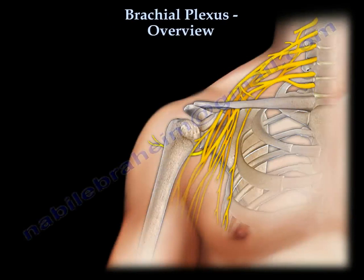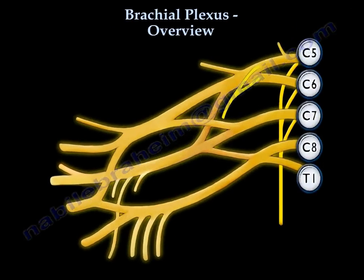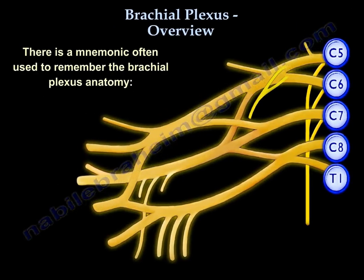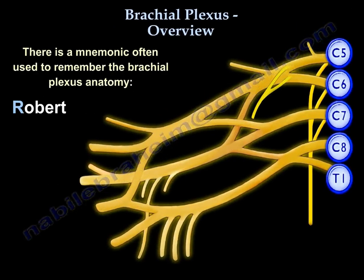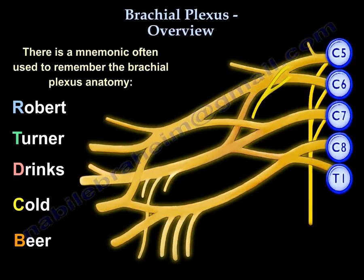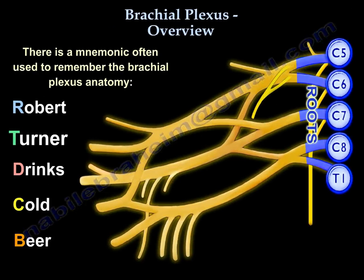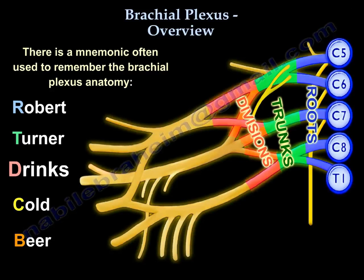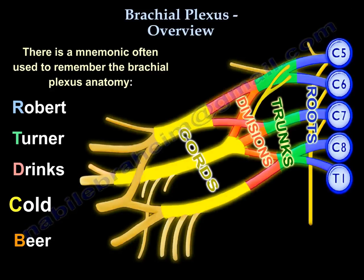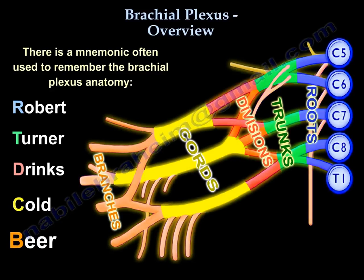Brachial plexus anatomy is a very difficult task, but I'm going to try to make it easy for all of us. People use the mnemonic 'Robert Turner drinks cold beer.' Robert is the roots, Turner is the trunks, drinks is the divisions, cold is the cord, and beer is the branches.